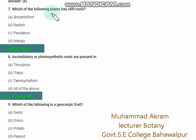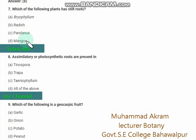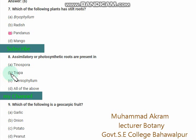Which of the following plant has stilt roots? The right option is option C — Pandanus. Aerial or photosynthetic roots are present in Tinospora — the right option is option B.